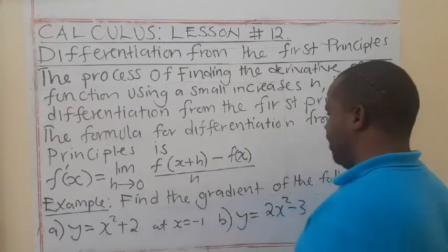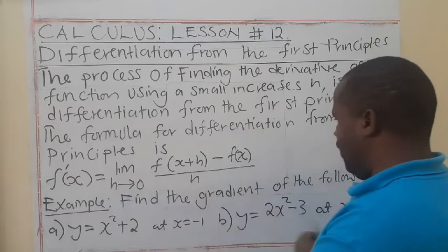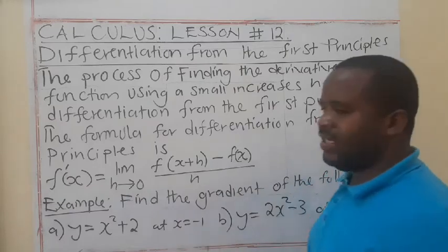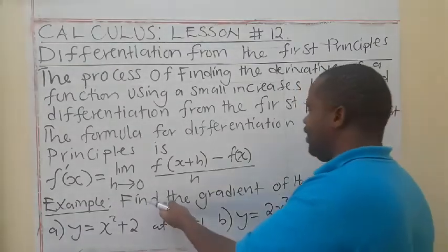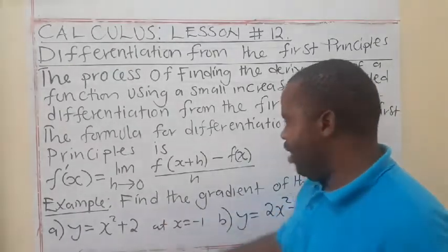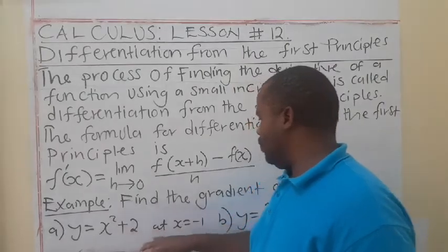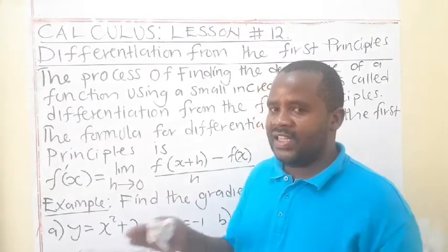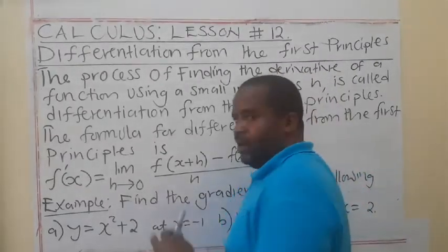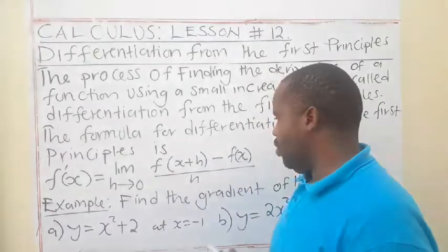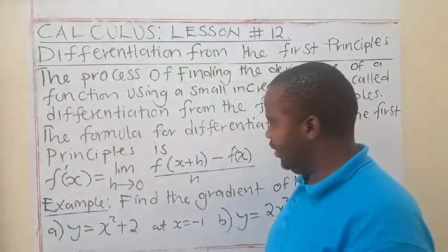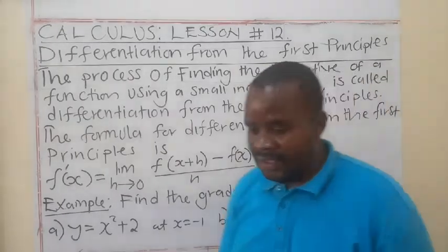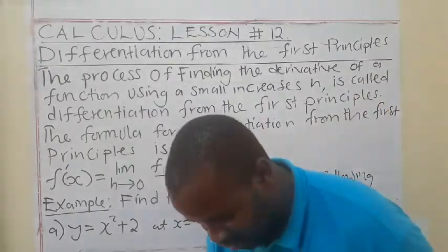I've got these two examples. I want us to see how we can find the gradient of the following functions at the given points. There are times where you are just supposed to get the function — find the derivative without a given point, and you just differentiate and end there. But if I give you a point, it means I want you to give me the exact value of the gradient.